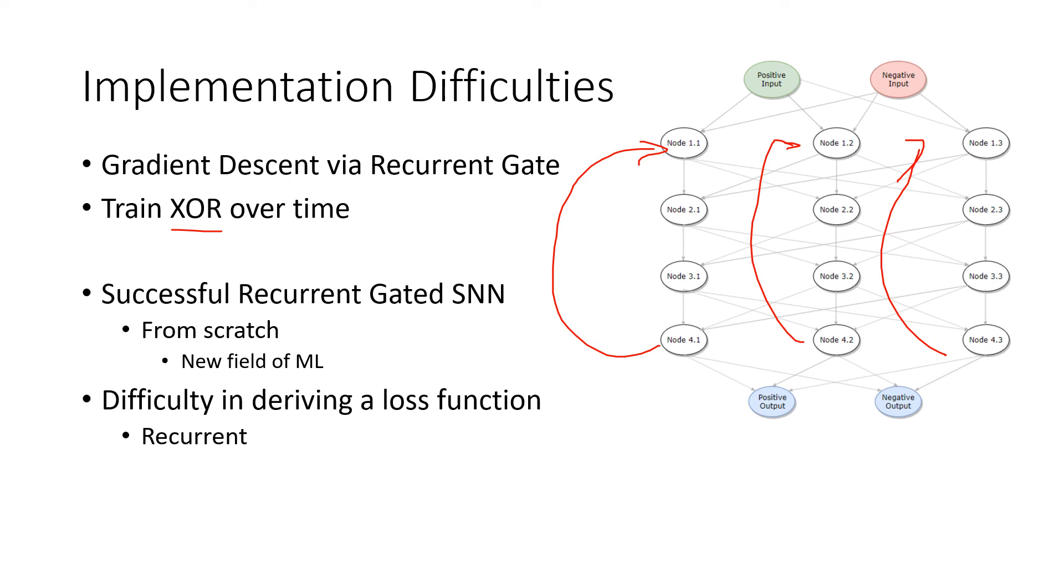But I was able to create a recurrent SNN from scratch that worked successfully. But my biggest problem was in deriving a loss function because this entire thing was recurrent and it takes inputs over time and expects it to be saved until there's an output. And coming up with a loss function for an XOR, something where you have two input spikes that are basically binary and then an output was a big challenge for me.